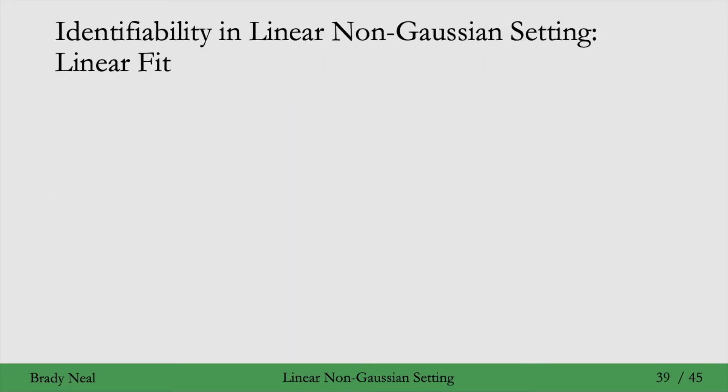Say that we have some data, and we're going to regress Y on X. We're going to fit a linear regression to these data points and get this line. We'll say that this is the correct causal direction. In other words, Y is generated from X. When we do the linear regression in this causal direction, we get this nice line that seems to fit the data pretty well.